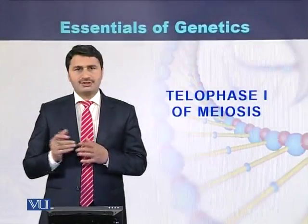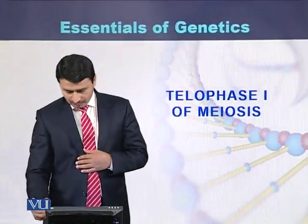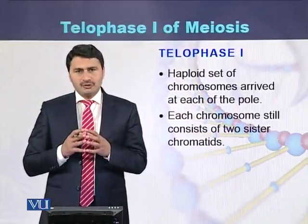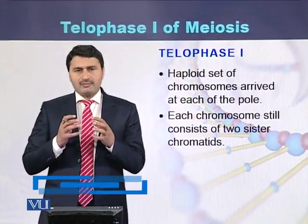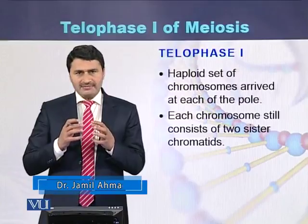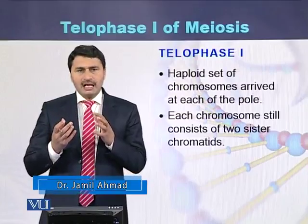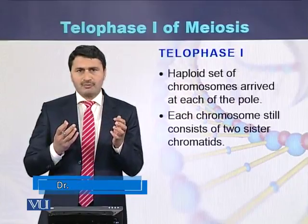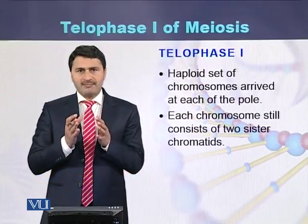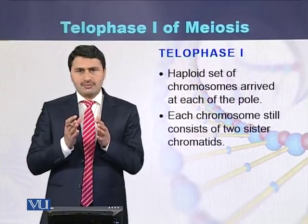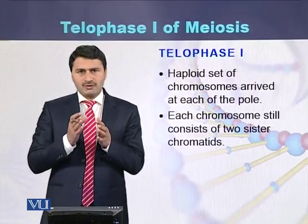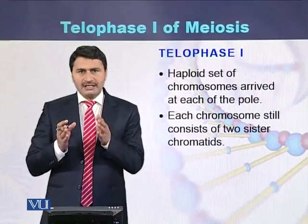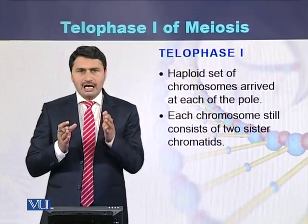Telophase I of meiosis. During telophase I of meiosis, half the number of chromosomes have arrived at one pole and half the chromosomes have arrived at the other pole. For example, if there are 6 chromosomes in total, 3 will be present at one pole while the remaining 3 will be present at the other pole.